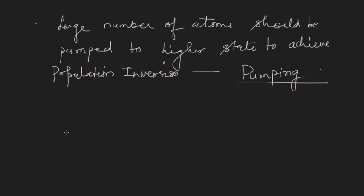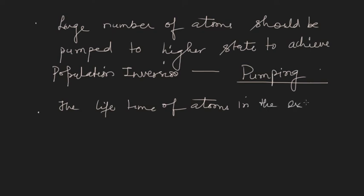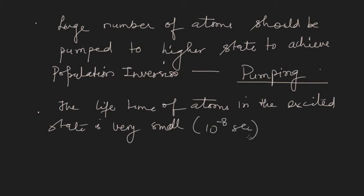Now, in order to achieve population inversion, we have pumped a large number of atoms into the higher excited state. But the lifetime of atoms in the excited state is very small — typically of the order of 10 to the minus 8 seconds, as I mentioned. So we have pumped a large number of atoms and achieved population inversion, but this is not enough because the atoms quickly come back down.